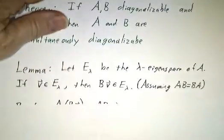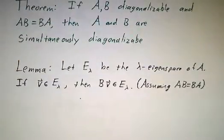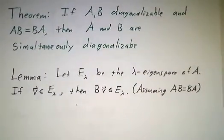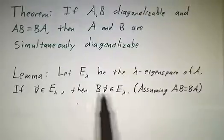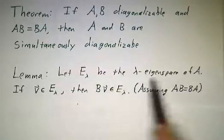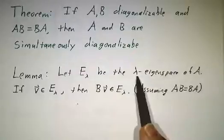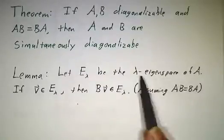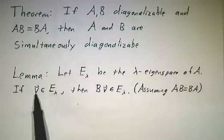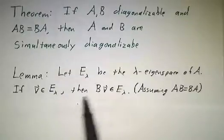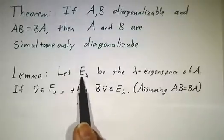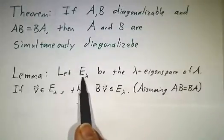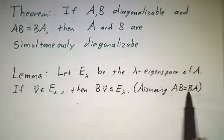Now, the first step is to show how B acts on the eigenspaces of A. So let's suppose that E_λ is an eigenspace of A corresponding to the eigenvalue λ. Then I claim that if V is in that eigenspace, then so is BV. In other words, B maps the λ eigenspace to itself. This is always assuming they commute.